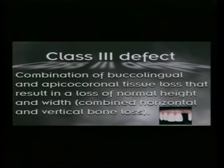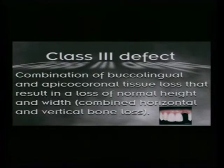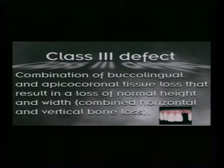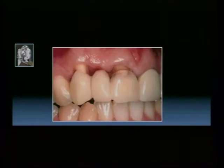Between the central incisors is an example of a class two defect constructed with hard tissue instead of soft tissue. The class three defect — the most challenging, especially when it involves multiple tooth segments — involves buccal, lingual, and apical-coronal tissue loss that results in loss of normal height and width, which we must deal with, often through multiple procedures to completely reconstruct the defect.